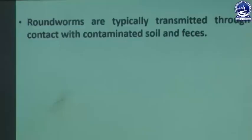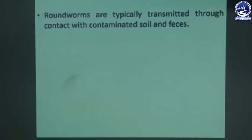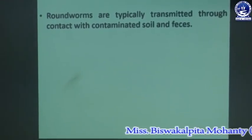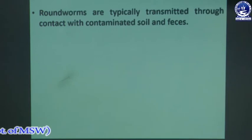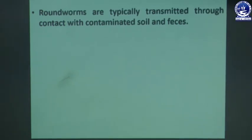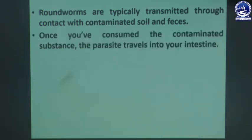Roundworms are typically transmitted through contact with contaminated soil. If the soil is infected by a parasite and a person has contact with that soil, the person will be infected by roundworms. Once you have consumed a contaminated substance, the parasite travels into your intestine.